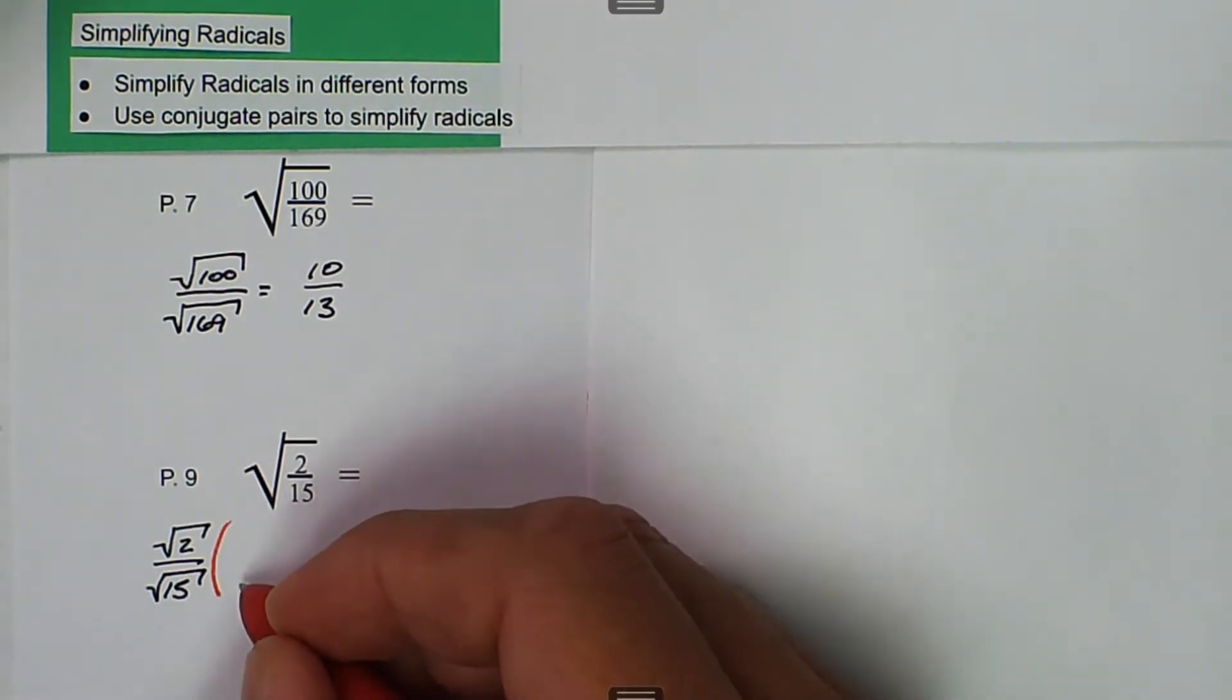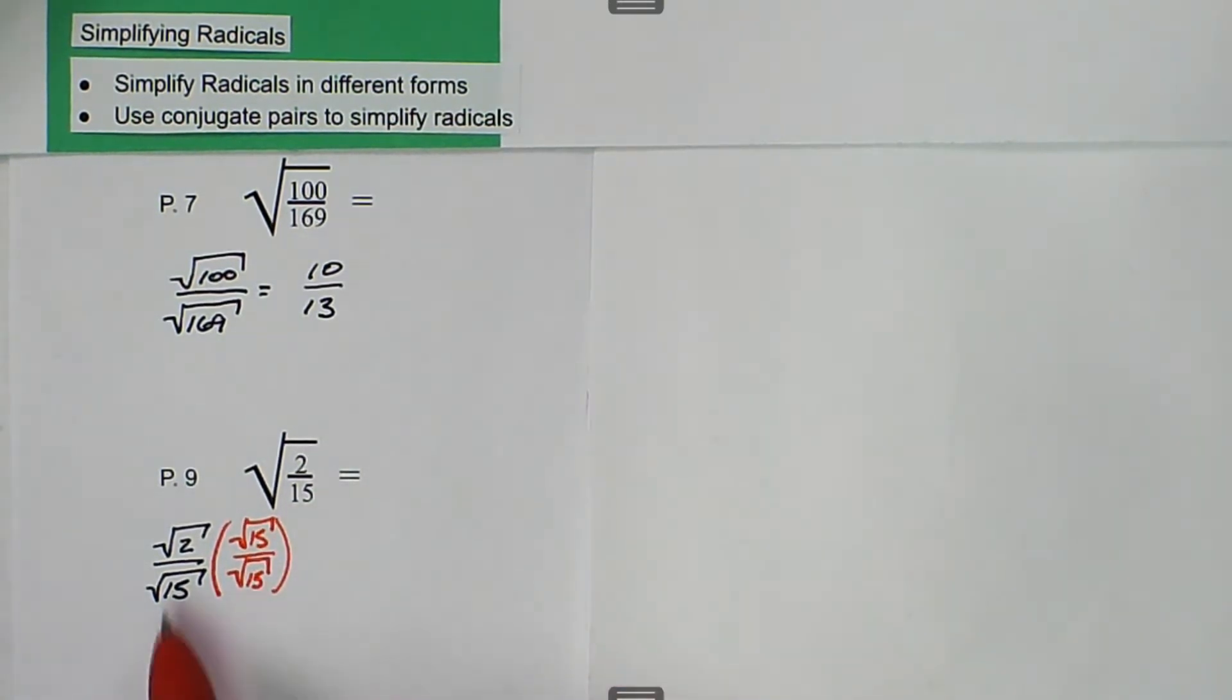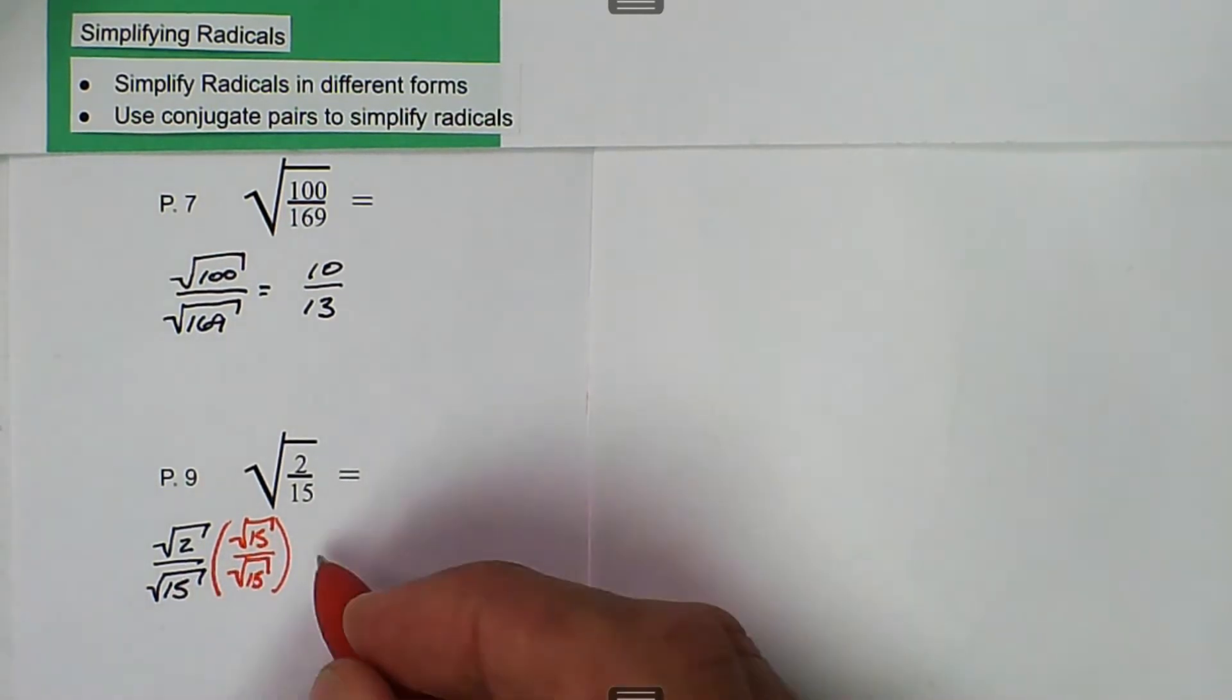In this case, we have to multiply by the square root of 15 divided by the square root of 15. When we do that, this is equal to 1, so it doesn't change the value.